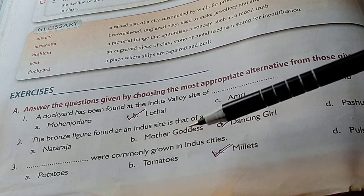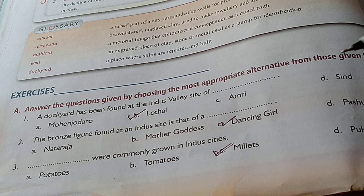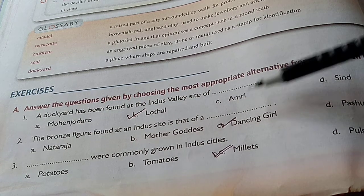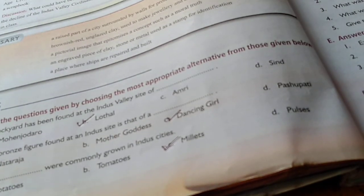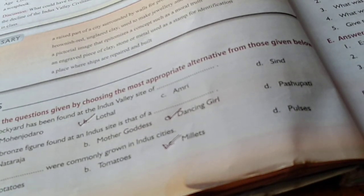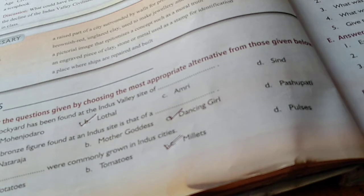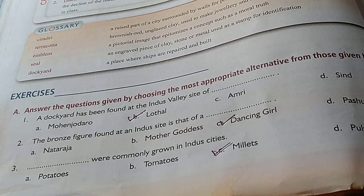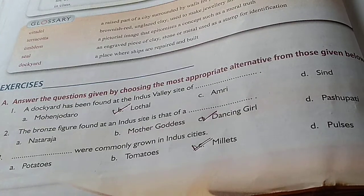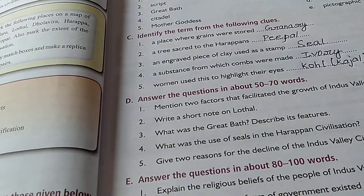The second question: The bronze figure found at an Indus site is that of a - which bronze figure was found that also became very popular? That is the bronze figure of a dancing girl. That shows how much metal was also used in the crafts. The third question: millets were commonly grown in Indus cities.